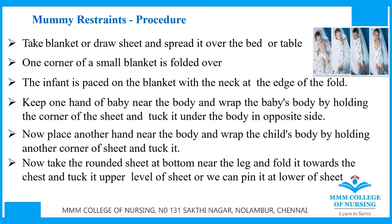The procedure for mummy restraints: take a blanket or draw sheet and spread it over the bed or table. Fold one corner of a small blanket over. Place the infant on the blanket with the neck at the edge of the fold. Keep one hand of the baby near the body and wrap the baby's body by holding the corner of the sheet and tucking it under the body on the opposite side. Place the other hand near the body and wrap by holding another corner of the sheet and tuck it. Take the rounded sheet at the bottom near the legs, fold it towards the chest, and tuck it at the upper level, then pin it to the lower part of the sheet.